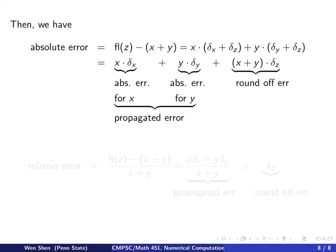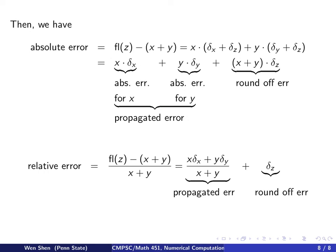The propagated error in this addition, when looking at absolute error, is simply the absolute errors of x and y added together. For the relative error, we divide the absolute error by the exact value z = x + y. The propagated relative error takes a less neat expression, plus delta_z for the round-off relative error.